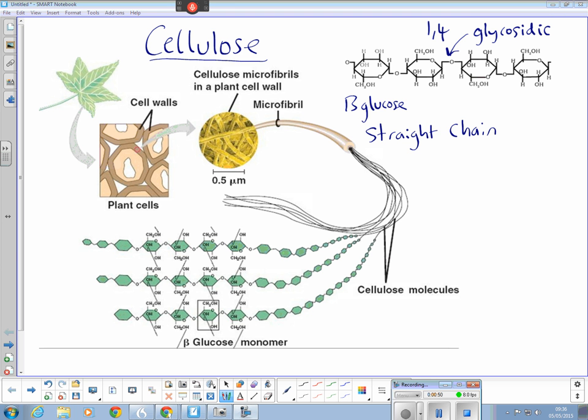Alternate glucose molecules are inverted and you can see that here with this CH2OH group being on one side, and the next beta glucose molecule has been flipped upside down, and so on. So we have inverted beta glucose molecules.